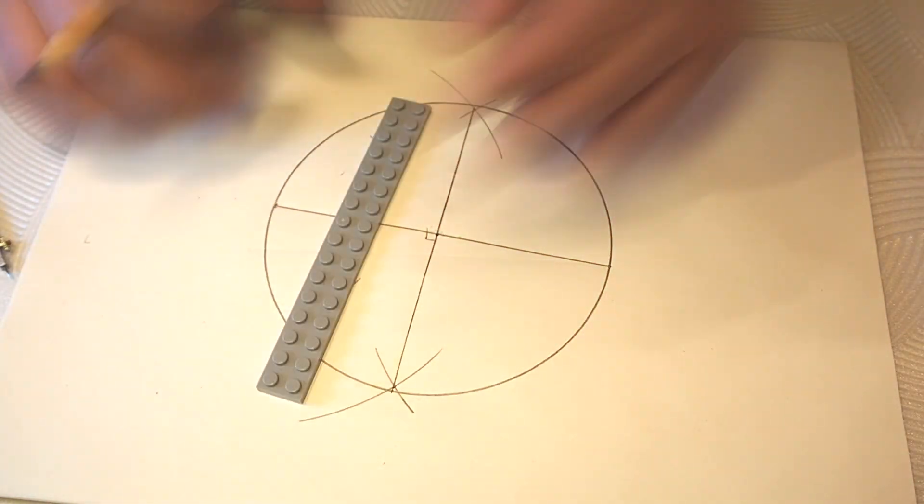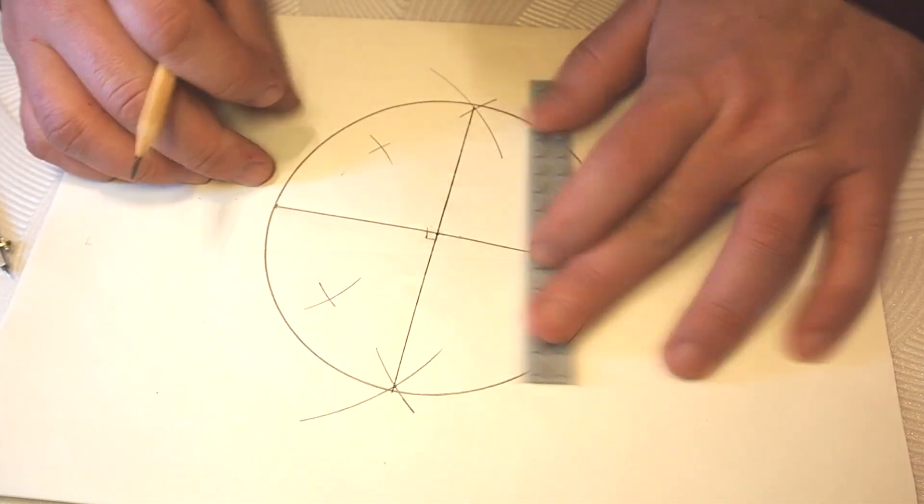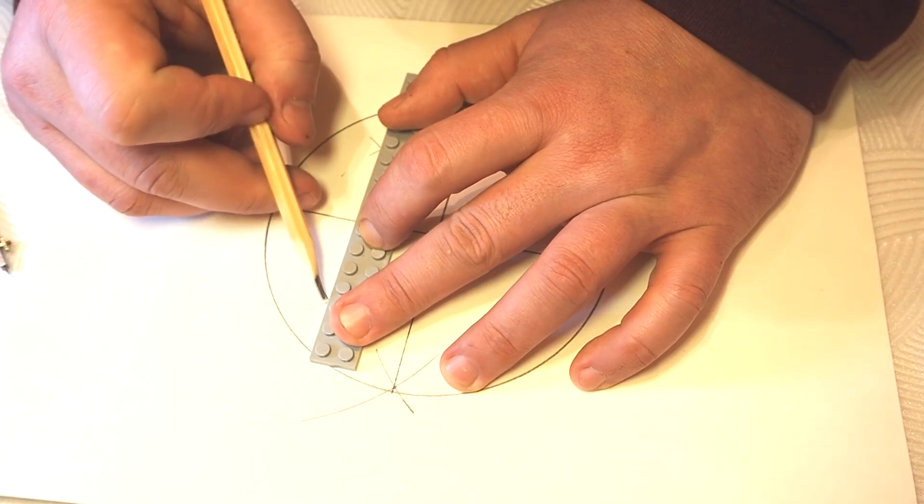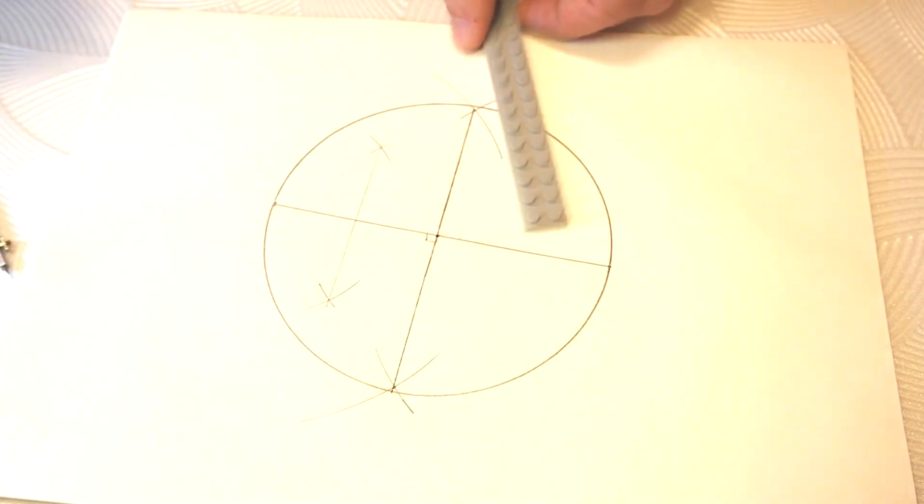We need to connect those points with another line, dividing a half of the basic line into two equal parts. This is the point we need.